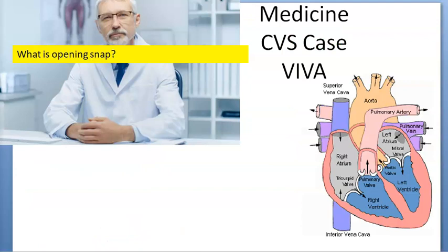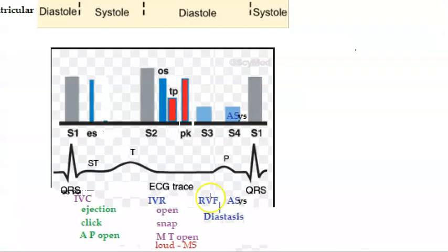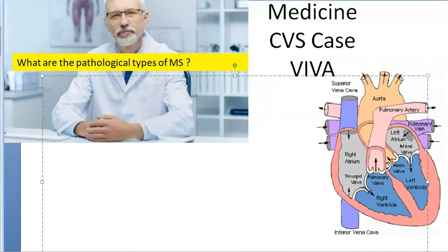What is opening snap? Opening snap is the sound that comes after S2 when the mitral and tricuspid valves open. So the opening snap is the sound that comes after S2, and it is caused by the opening of the mitral and tricuspid valve.